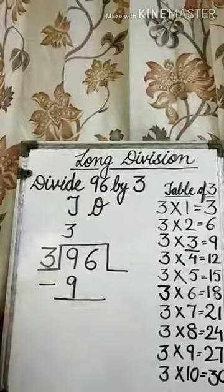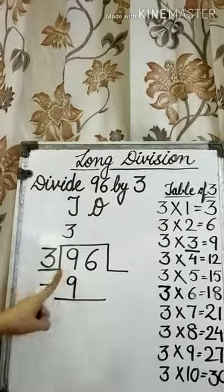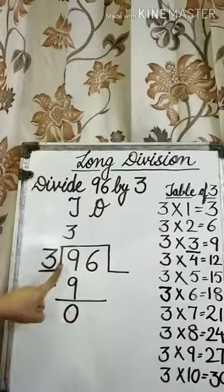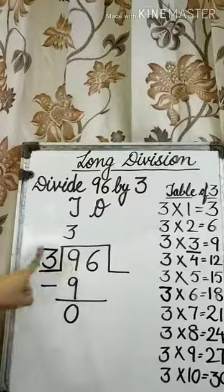Now, we need to subtract 9 minus 9 is equal to 0. Now, we have divided 9 by 3.